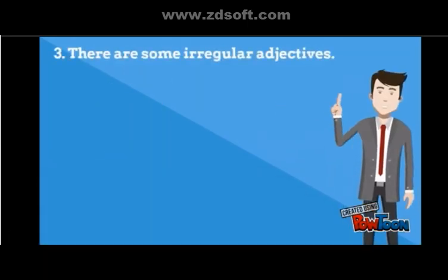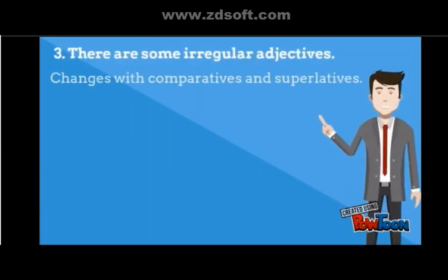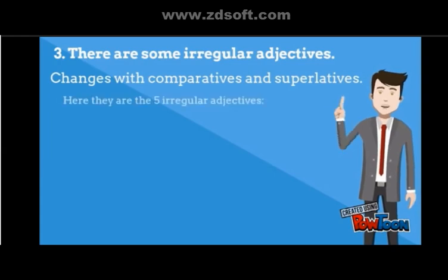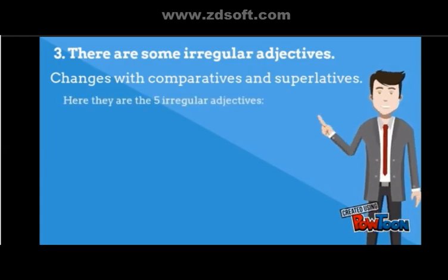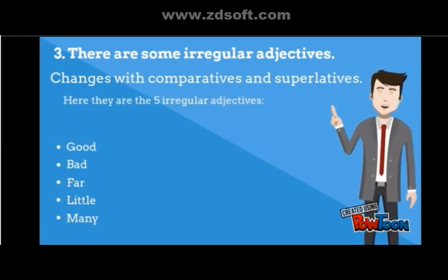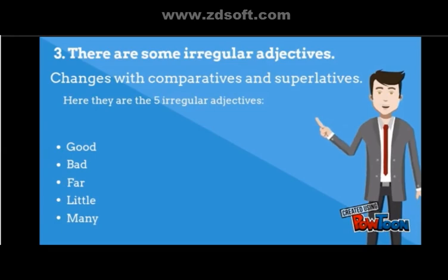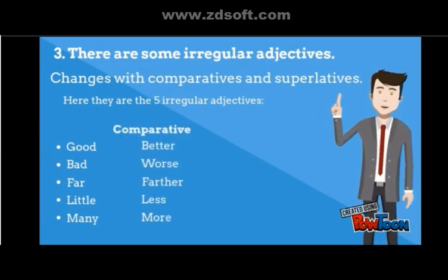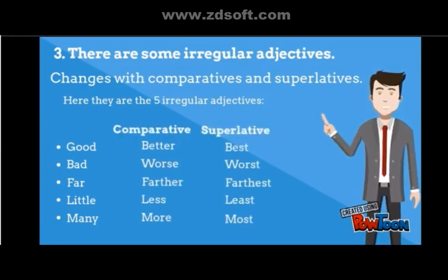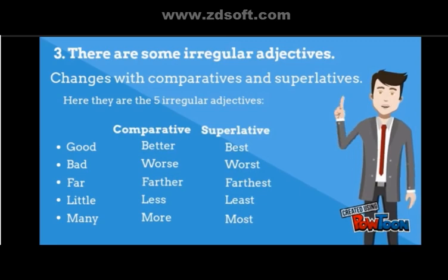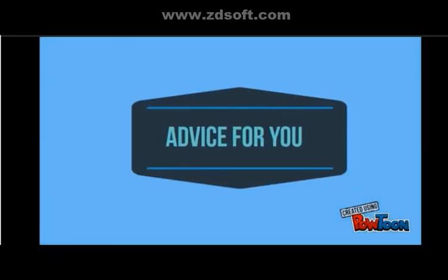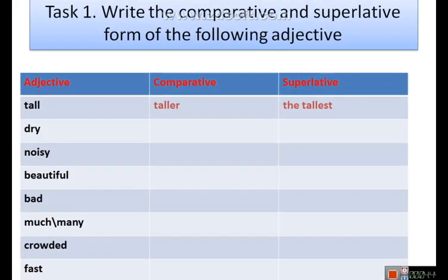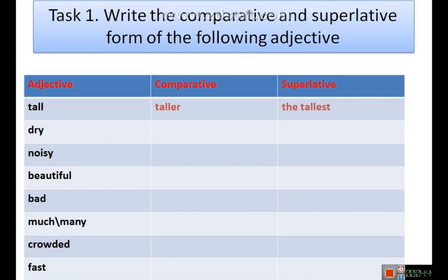And there are some irregular adjectives that change with comparatives and superlatives. There are five of them: good, bad, far, little, and many. Here you have their comparative form and their superlative form.